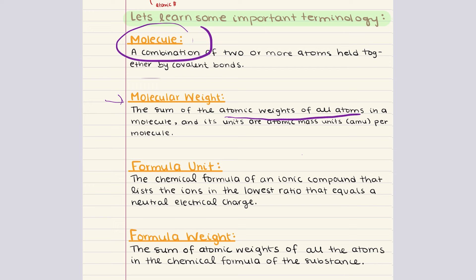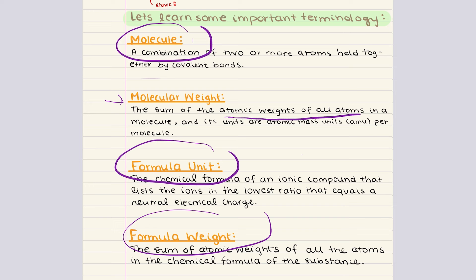Instead, ionic compounds form nearly infinite three-dimensional arrays of charged particles. As an example, each sodium ion is surrounded by chloride ions and vice versa, creating a coordinated lattice structure, making it difficult to define a single sodium chloride molecule. Consequently, the term formula unit is used to represent the empirical formula of the compound. A formula unit is the chemical formula of an ionic compound listing ions in the lowest ratio that equals a neutral electrical charge, and formula weight is the sum of the atomic weights of all atoms in that chemical formula.